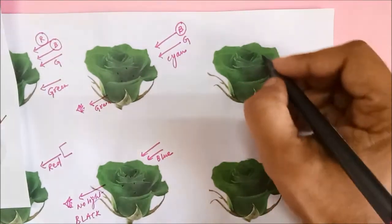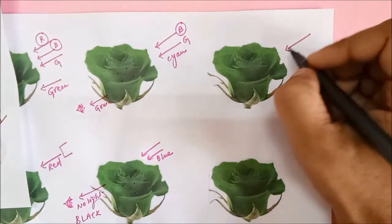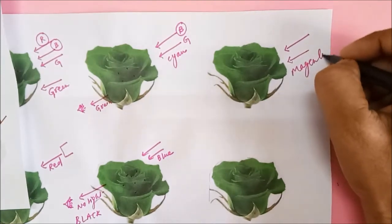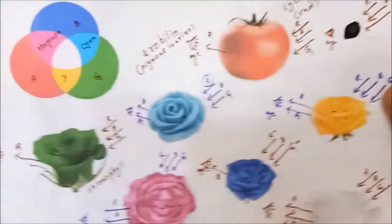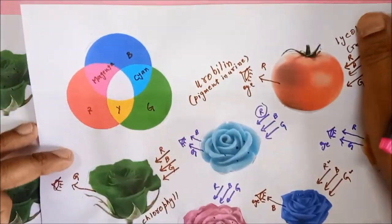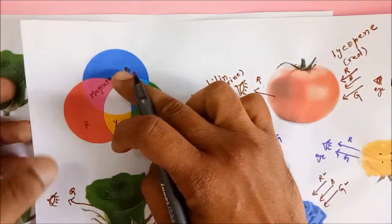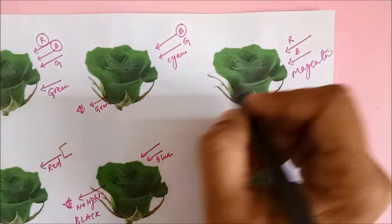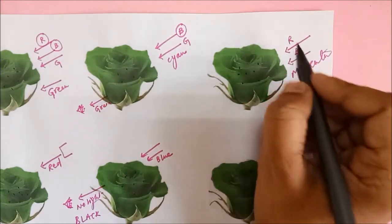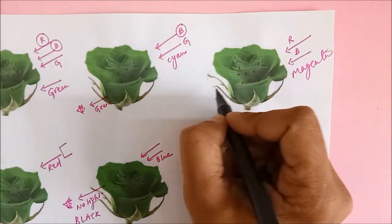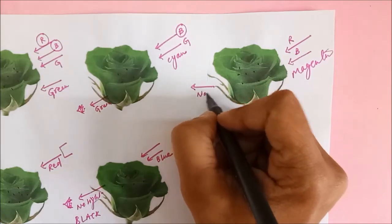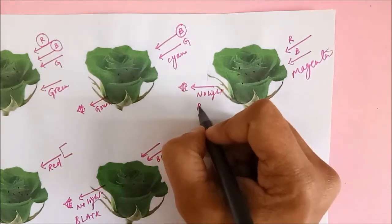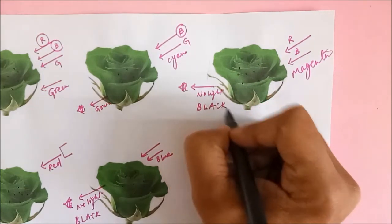If we incident magenta light — magenta is made up of red and blue color, so you can consider this as red and blue — you know that these pigments absorb both colors. So again no color gets reflected, and you perceive this as black again.